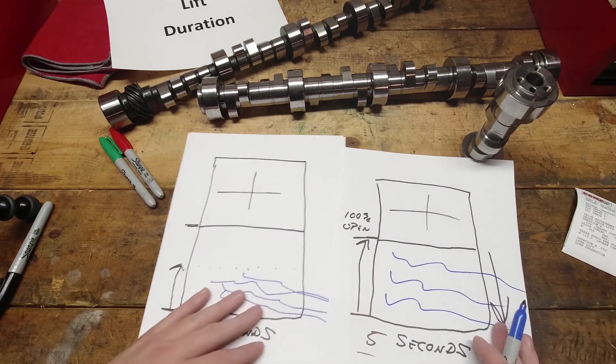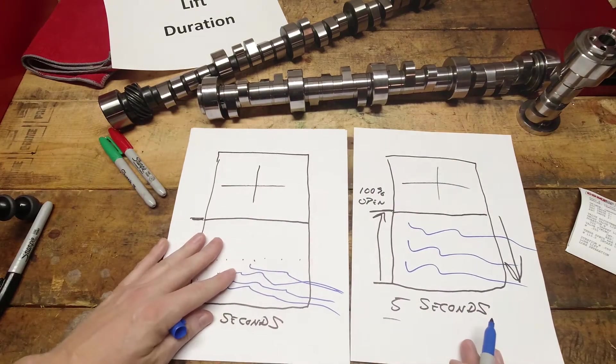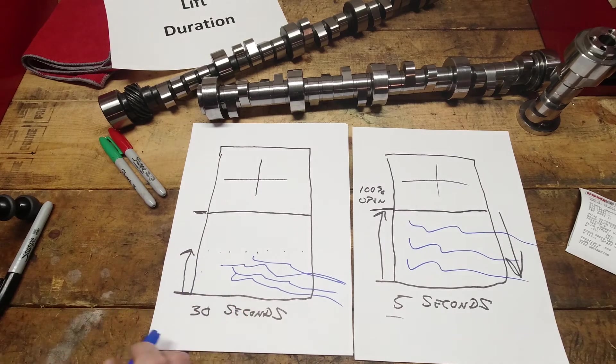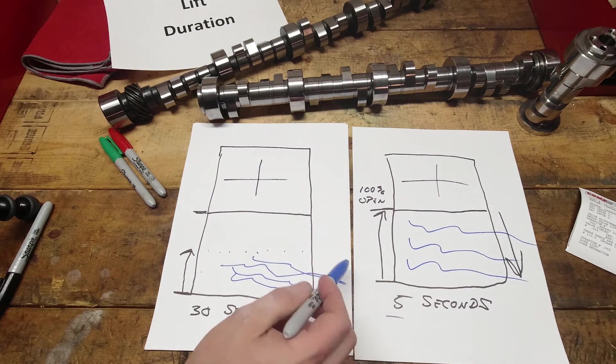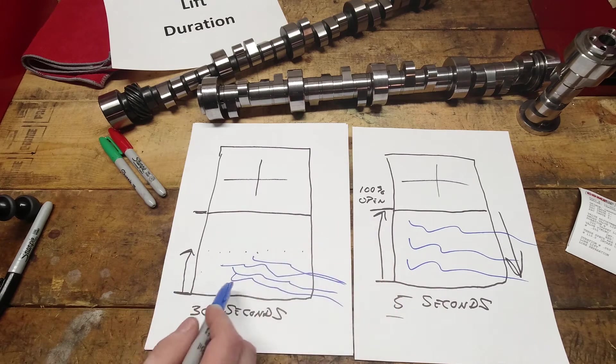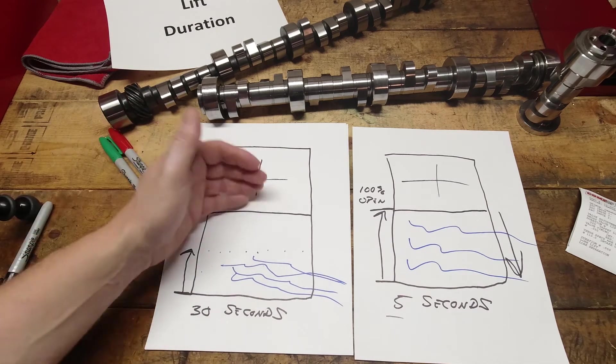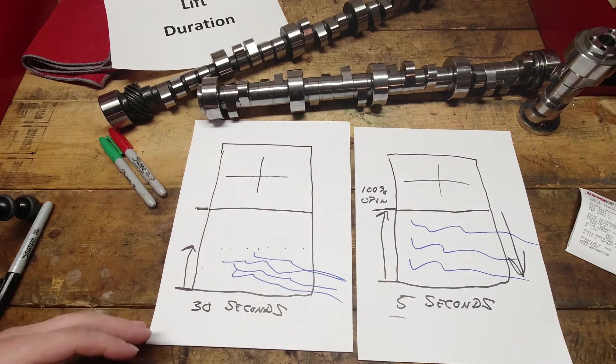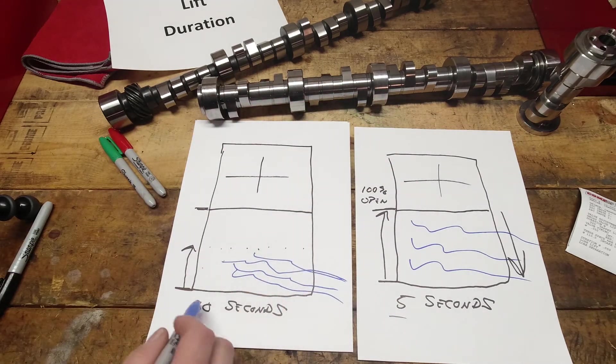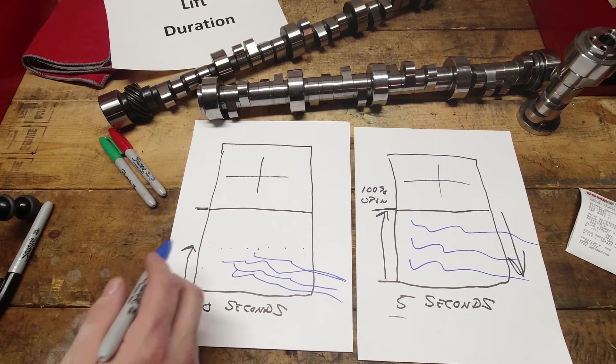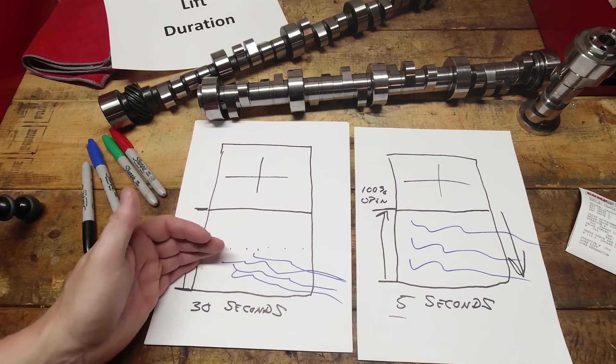This one here, a lot bigger surface area. When you look at these two, this window is open all the way, 100% max lift. But it's only open for a duration of five seconds. This window is only at half lift, but it's open for a duration of 30 seconds. Which window flows more air? Which one's going to have more airflow going through it? Is it the one open for five seconds with 100% lift, or the one open at 30 seconds with only half lift?